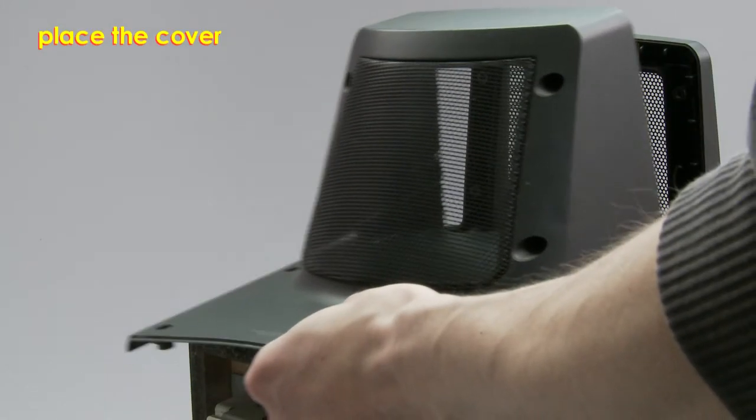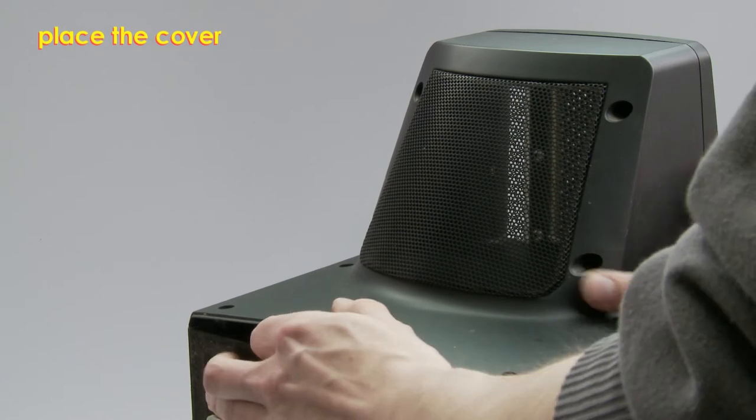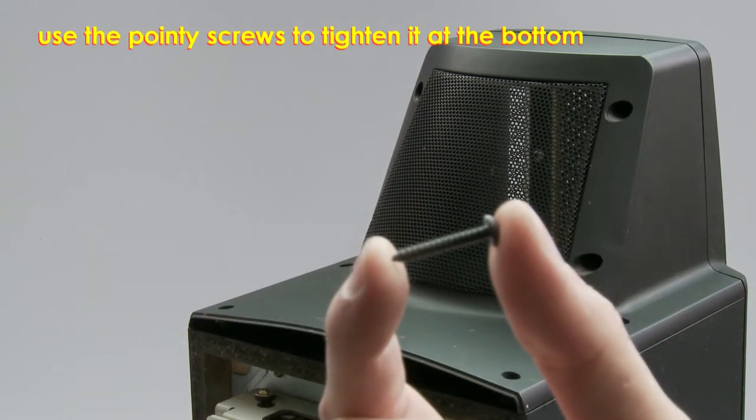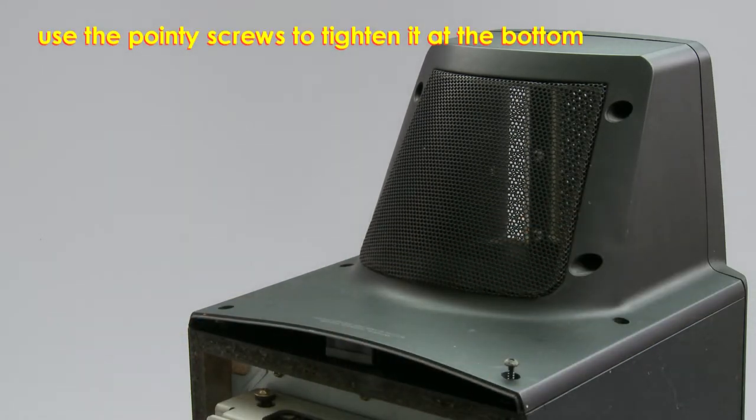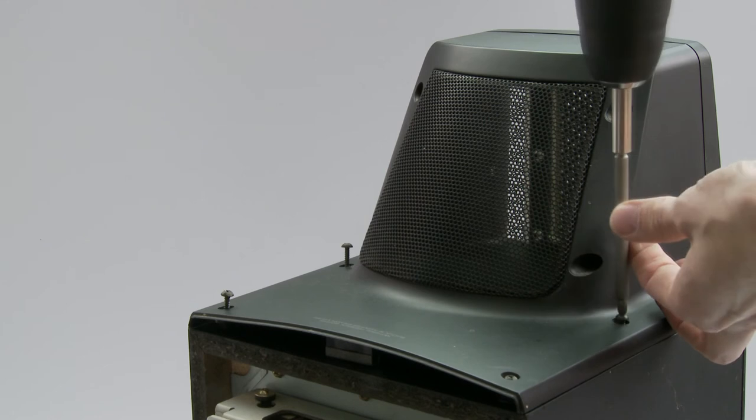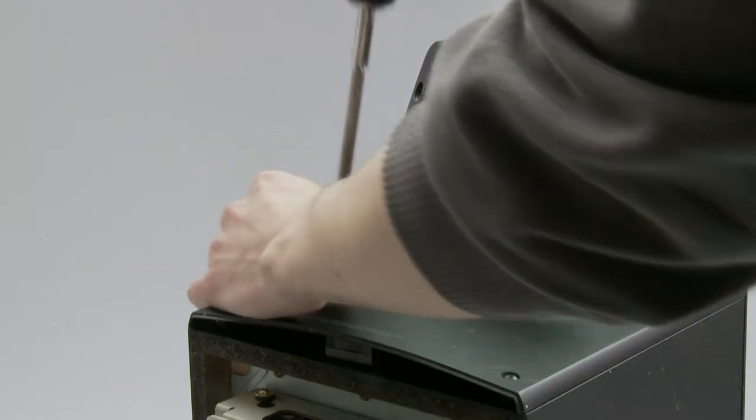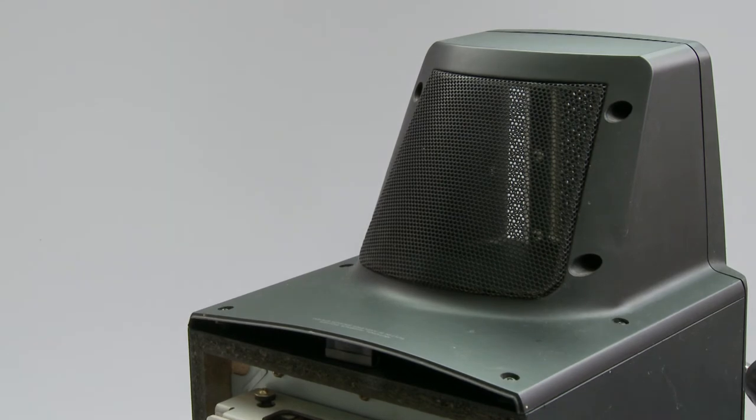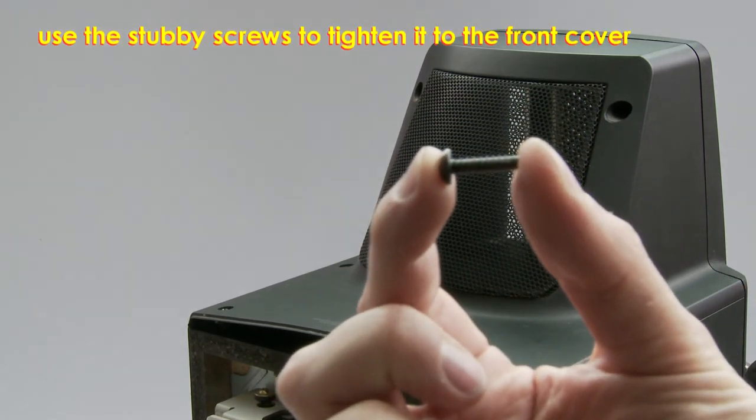Mount the top cover. Use pointy screws for the wood at the top of the loudspeaker. Use the stubby screws for the front plastic cover.